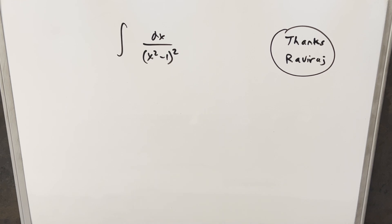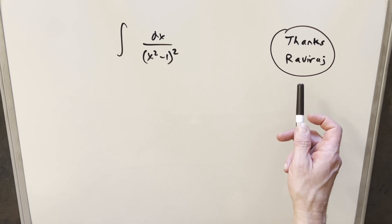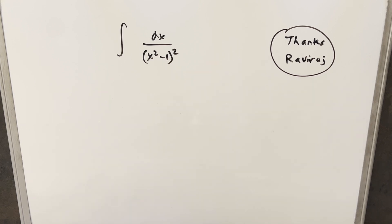We have here another integral to take. I've got the integral of 1 over (x squared minus 1) squared dx. This is actually a problem I did a week or so back, but I wanted to try an alternative method that was suggested to me in the comments.